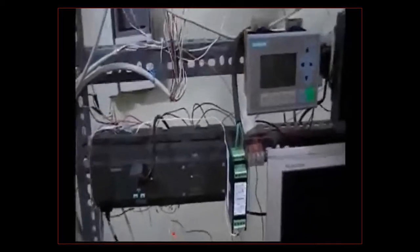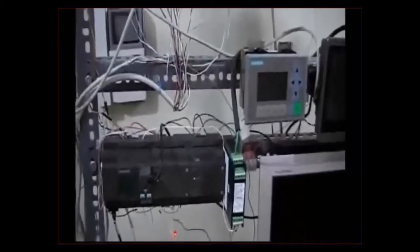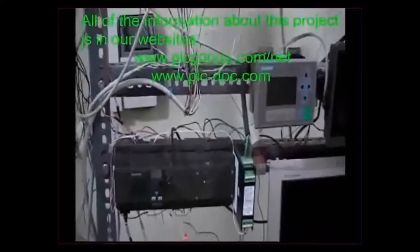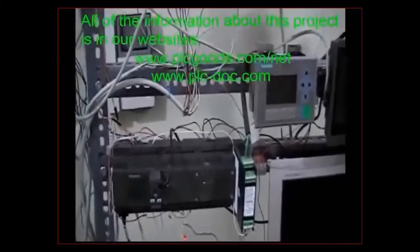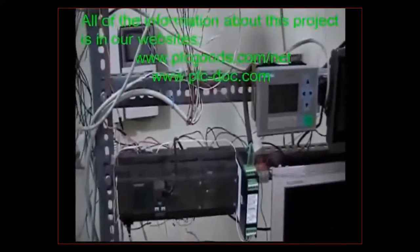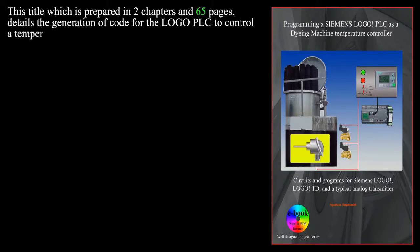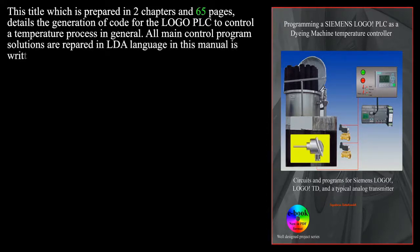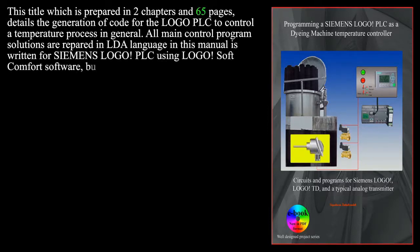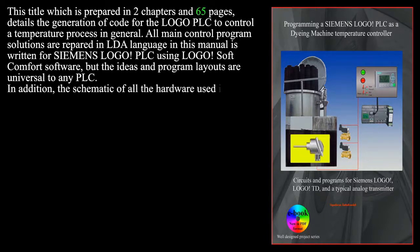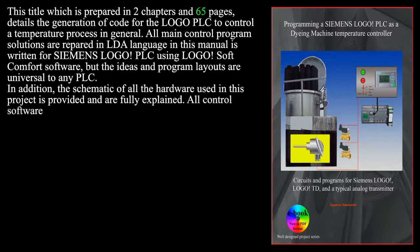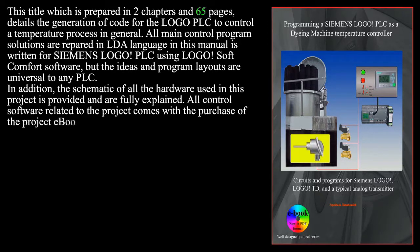All the information discussed here is available in an e-book. For more details on how the program is developed, please visit the website. This title, prepared in two chapters and 65 pages, details the generation of code for the LOGO PLC to control a temperature process. All main control program solutions are prepared in ladder language and written for Siemens LOGO PLC using LOGO Soft Comfort software, though the ideas and program layouts are universal to any PLC. The schematic of all hardware used in the project is provided and fully explained.